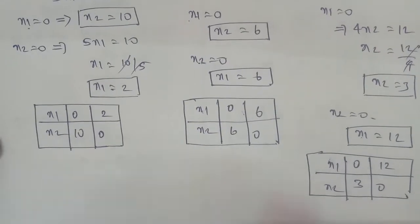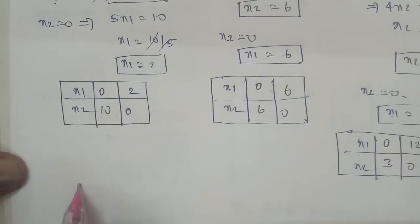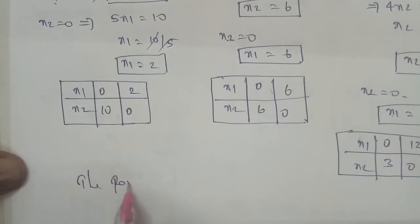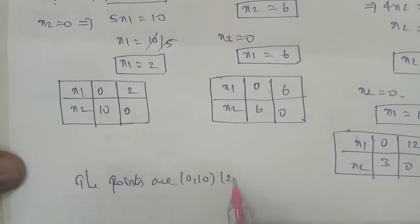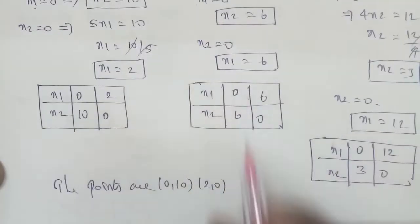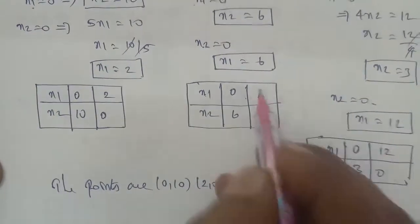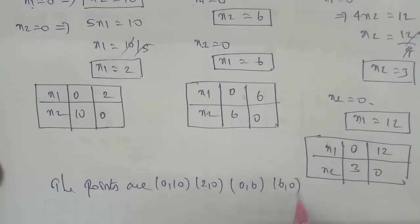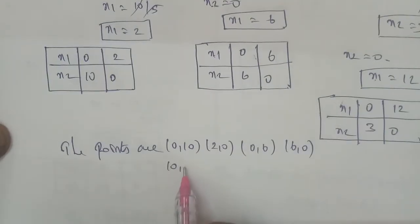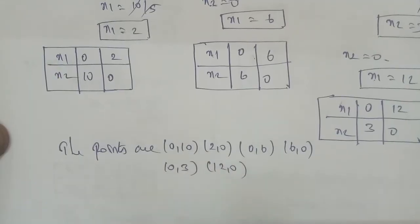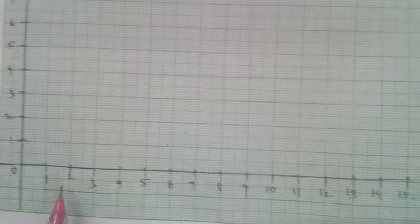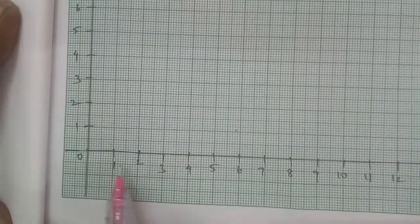Now listing the points: first equation gives (0,10) and (2,0); second equation gives (0,6) and (6,0); third equation gives (0,3) and (12,0). We have a graph where each unit is equal to 1.